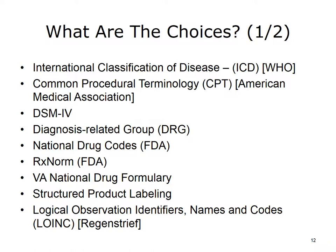There are over 400 different terminologies in use throughout the U.S. today. The more important and popular of these terminologies are listed here. Choices include: International Classification of Disease (ICD), WHO — current version in the U.S. today is ICD-10; Common Procedural Terminology (CPT), American Medical Association; Diagnostic and Statistical Manual of Mental Disorders (DSM-4), American Psychiatric Association; Diagnosis Related Group (DRG); National Drug Codes (NDC), FDA; RxNorm, FDA; VA National Drug Formulary; Structured Product Labeling, FDA and HL7; and Logical Observation Identifiers Names and Codes (LOINC), Regenstreif.